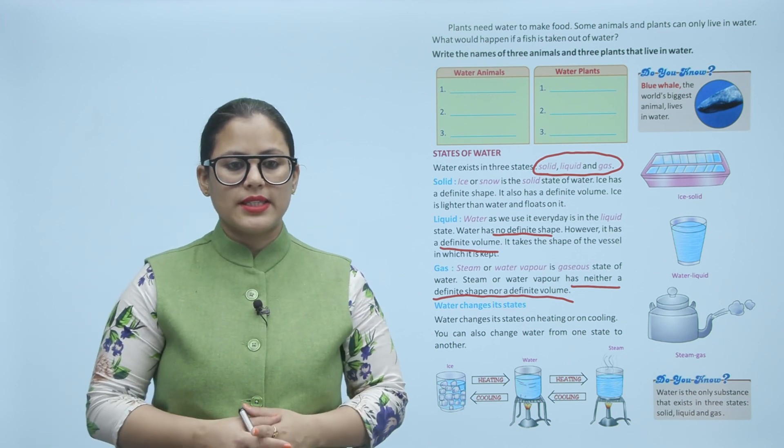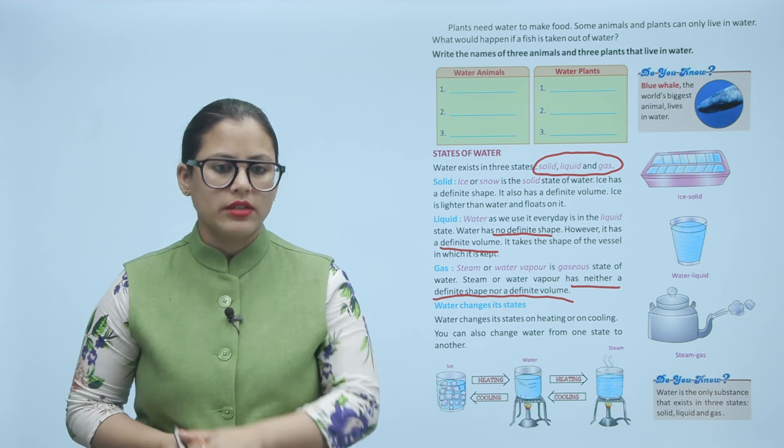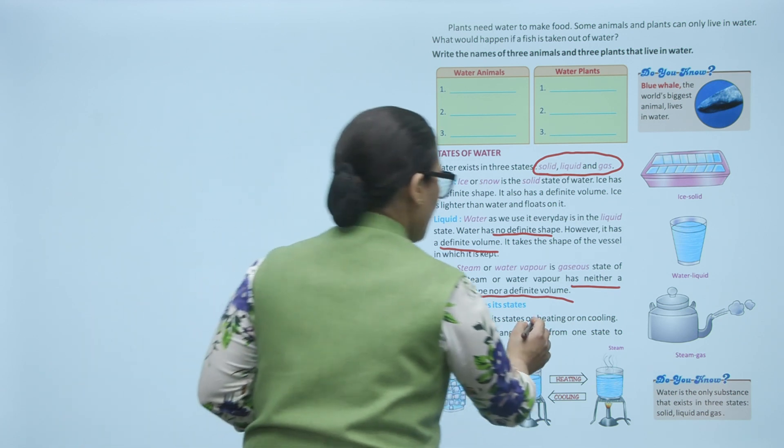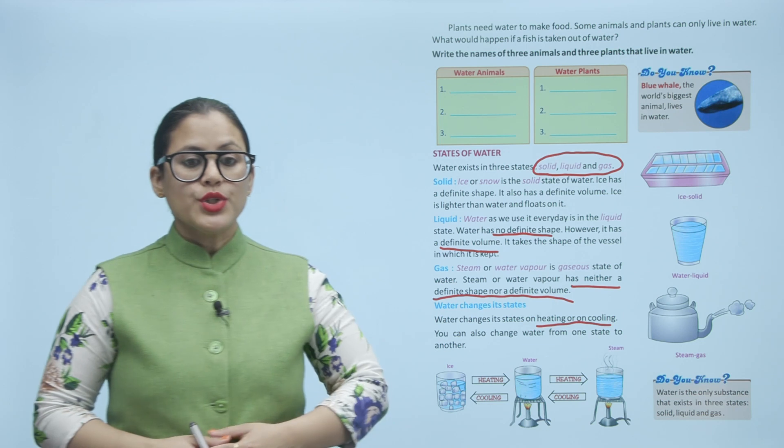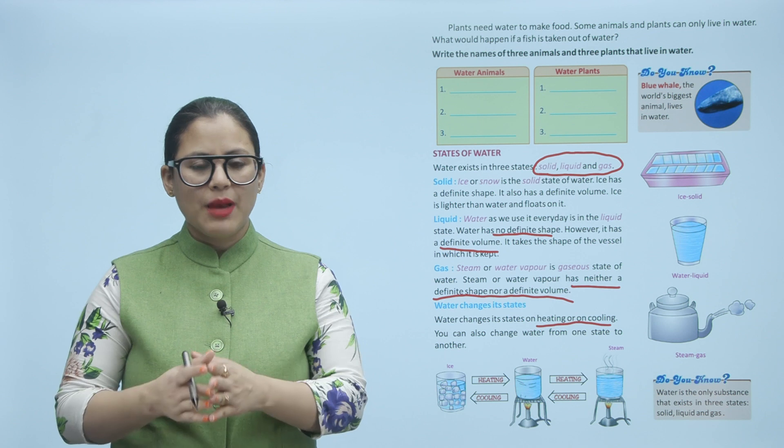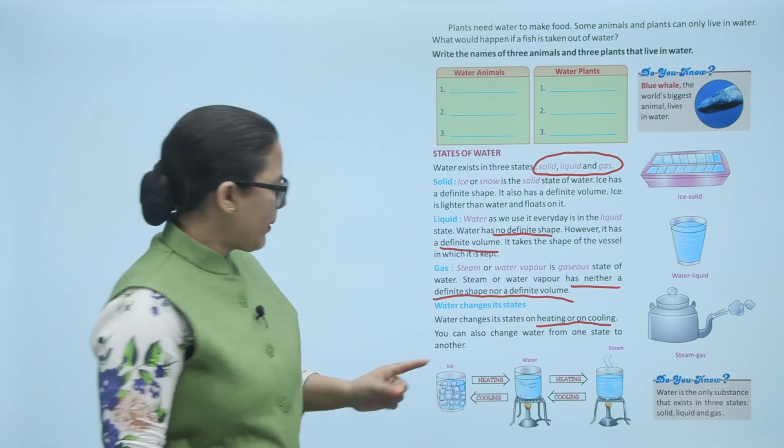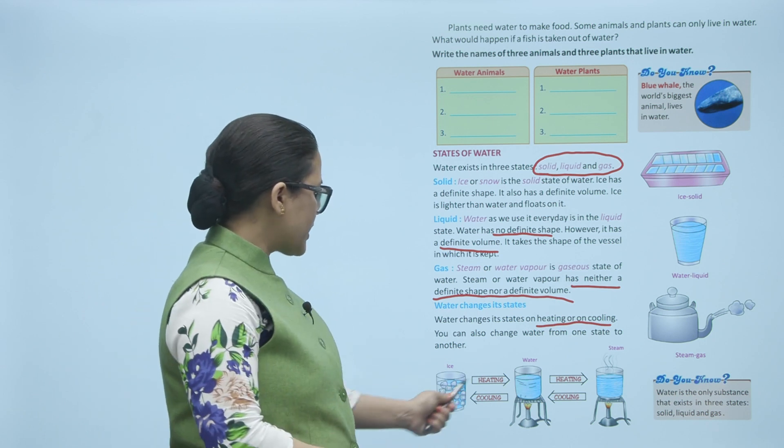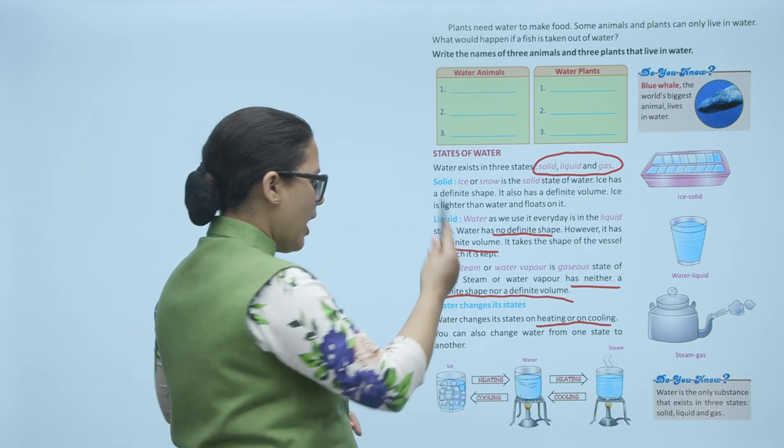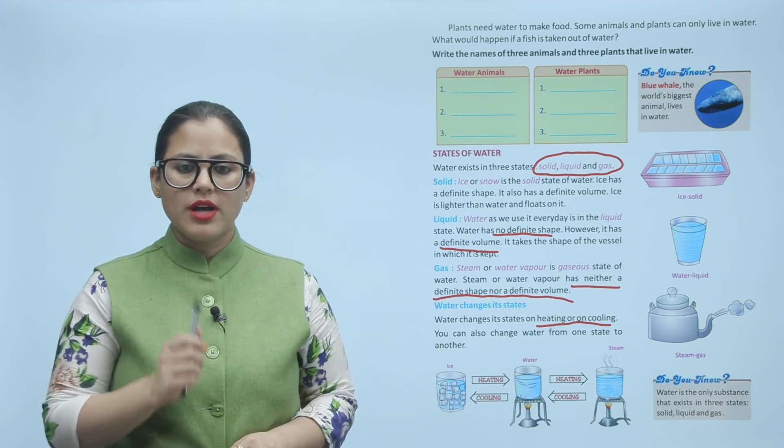Water changes its states. Water changes states on heating or on cooling. You can also change water from one state to another, either by heating or by cooling. Water is the only substance that exists in three states: solid, liquid and gas. Here's an example: if you heat ice, it becomes water. Heat water, it becomes steam, the gaseous form. Cool steam and it becomes water. Cool water and it converts to ice.